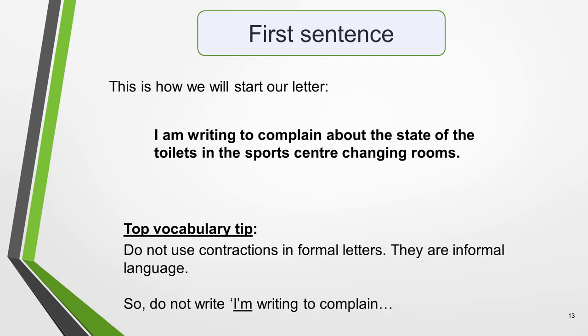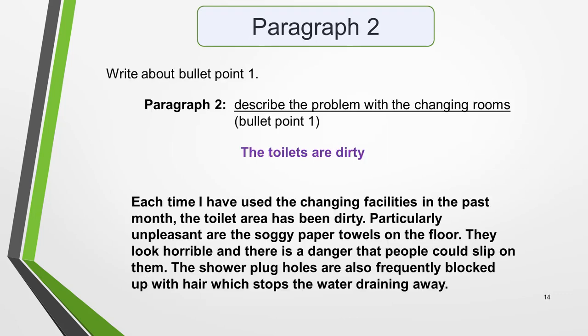In the second paragraph, you write about bullet point 1, which is to describe the problem with the changing rooms. My idea for this was that the toilets are dirty. Remember to keep the language formal. Aim for around 50 words for each of paragraphs 2, 3, and 4. You could write something like this: 'Each time I have used the changing facilities in the past month, the toilet area has been dirty. Particularly unpleasant are the soggy paper towels on the floor — they look horrible, and there is a danger that people could slip on them. The shower plug holes are also frequently blocked up with hair, which stops the water draining away.'